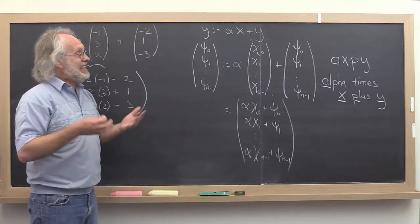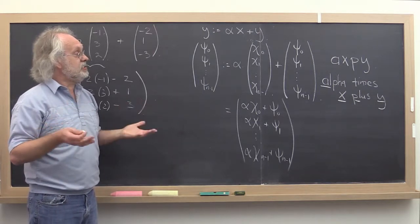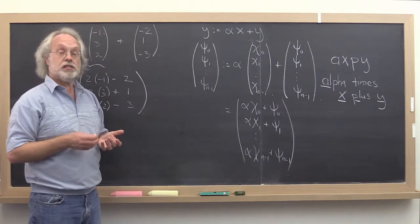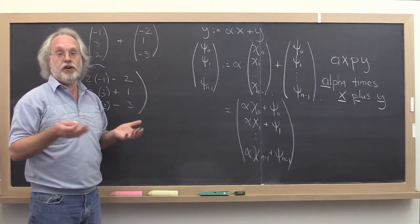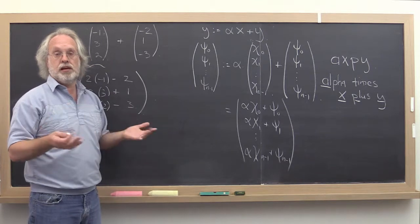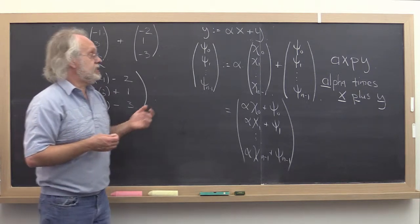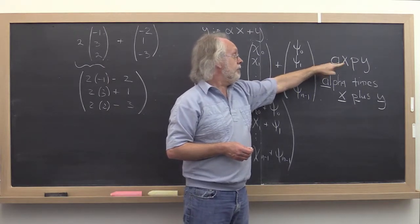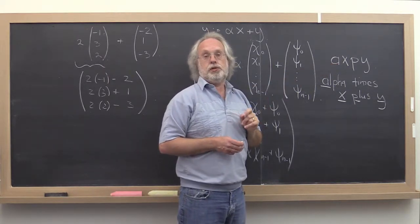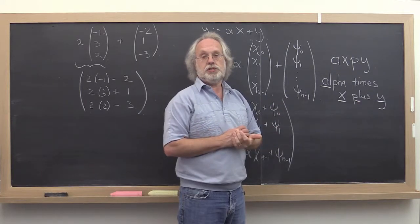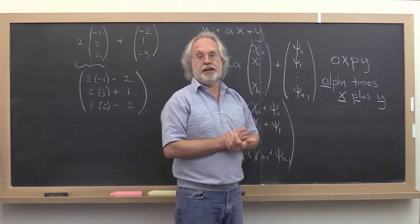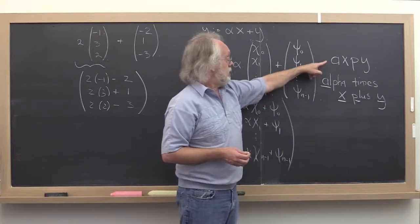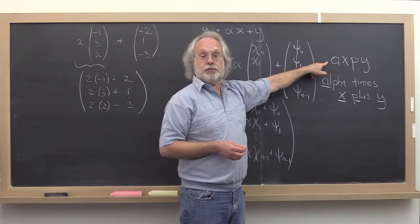And back then Fortran 66 and Fortran 77, the standards for Fortran only allowed six letters to be used to identify function names, subroutine names, and variable names. And as a result they had to be pretty innovative in the alphabet soup that they used to identify different operations. One of the operations for which they defined an interface was this Axpy operation. And that's where this particular acronym comes from.